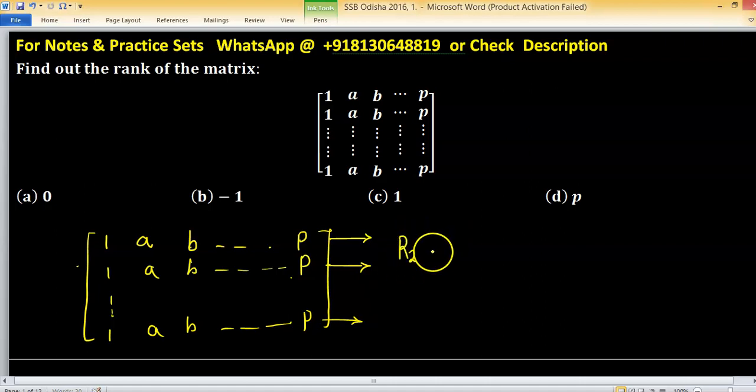For example, R2 goes to R2 minus R1, and similarly, you can apply Rn as Rn minus R1. Then other rows will go to 0, other than the first row.